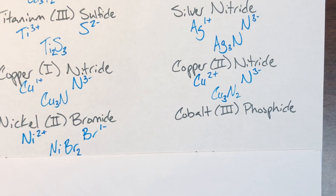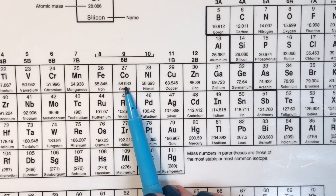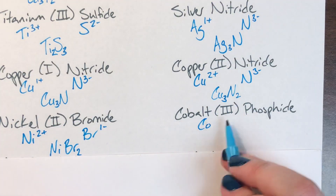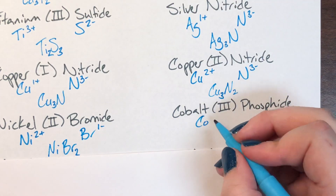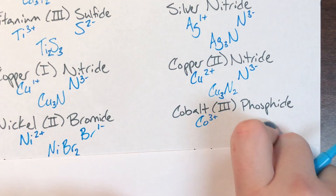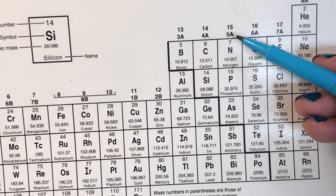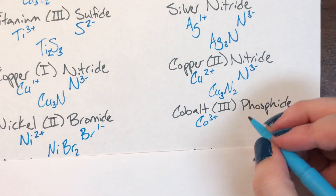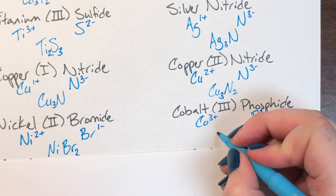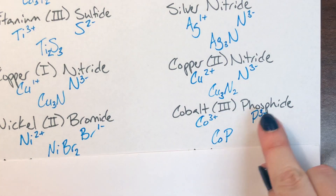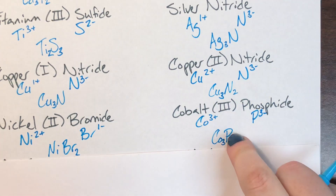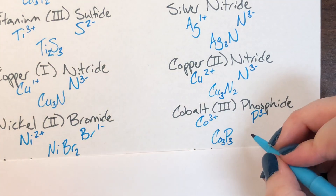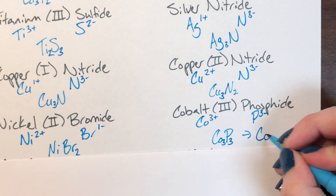Cobalt 3 phosphide. Cobalt is element number 27, symbol Co. Since it is not part of Katzenegel, it's going to tell me the charge right in the name. Cobalt 3 means a charge of positive 3. Phosphide is secretly phosphorus, in column 5A, with 5 valence electrons — it steals 3 to get to 8. Stealing is bad, so phosphorus has a charge of negative 3. Exchanging charges for subscripts: phosphorus's 3 becomes cobalt's 3, cobalt's 3 becomes phosphorus's 3. The ratio 3 to 3 simplifies to 1 to 1, so the formula is just CoP.